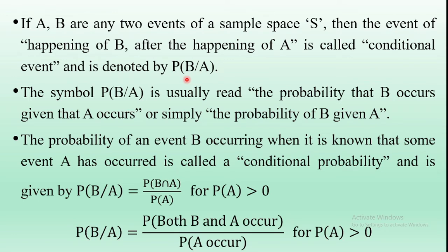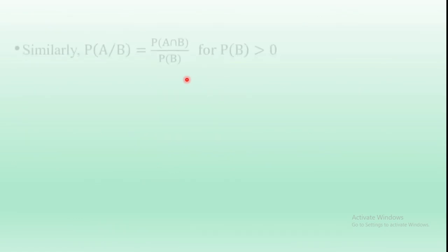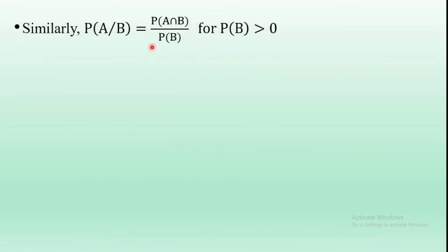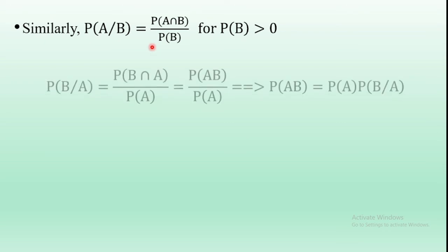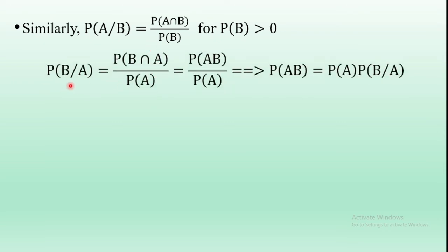Similarly, P(A|B) is the event of A happening after B has happened, and is called the conditional event. P(A|B) is equal to P(A∩B) divided by P(B), for P(B) greater than zero. From P(B|A) = P(B∩A)/P(A), the numerator P(B∩A) is also written as P(AB). Taking cross multiplication gives P(AB) = P(A) · P(B|A).